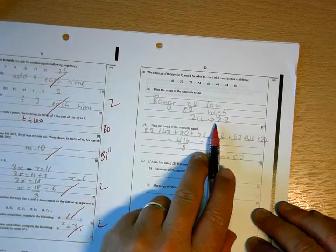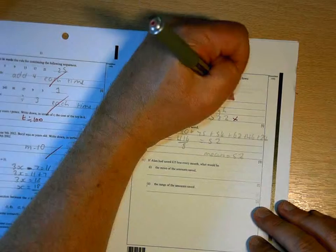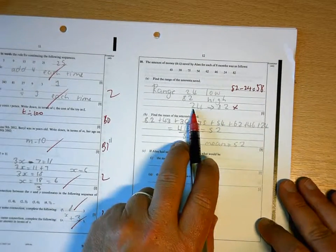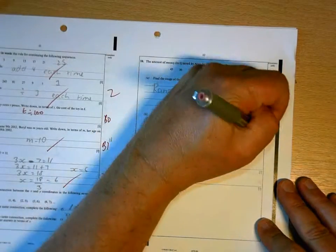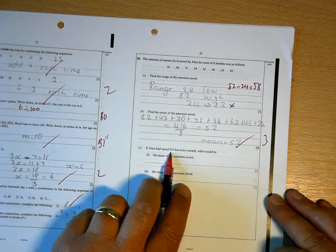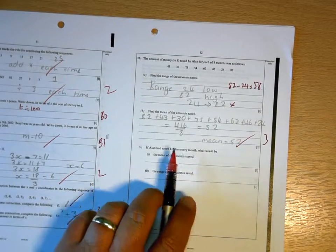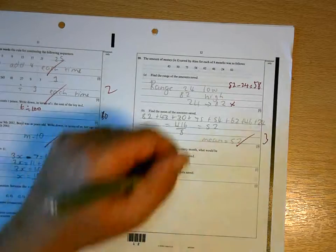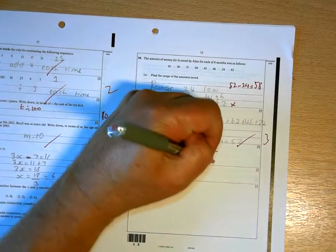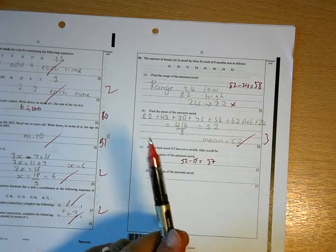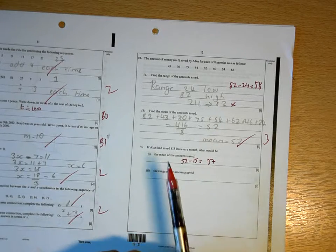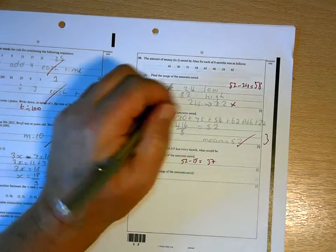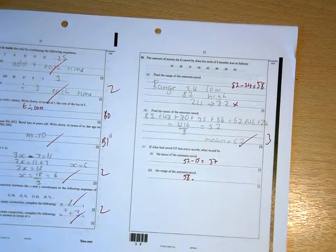When you're working out range, you have to work out the answer. So you have to do 82 take away 24 equals 58. The range is 58. It's not enough to say it's between there and there. The mean is 52. Well done. Now, if you save 15 pounds less every month, then every month would be 15 pounds less, which would take 15 pounds off the mean value. So the mean is 52 take away 15. For the range, because the difference between the largest and the smallest has both had 15 taken off it, the range is unaffected. So the range will stay the same.